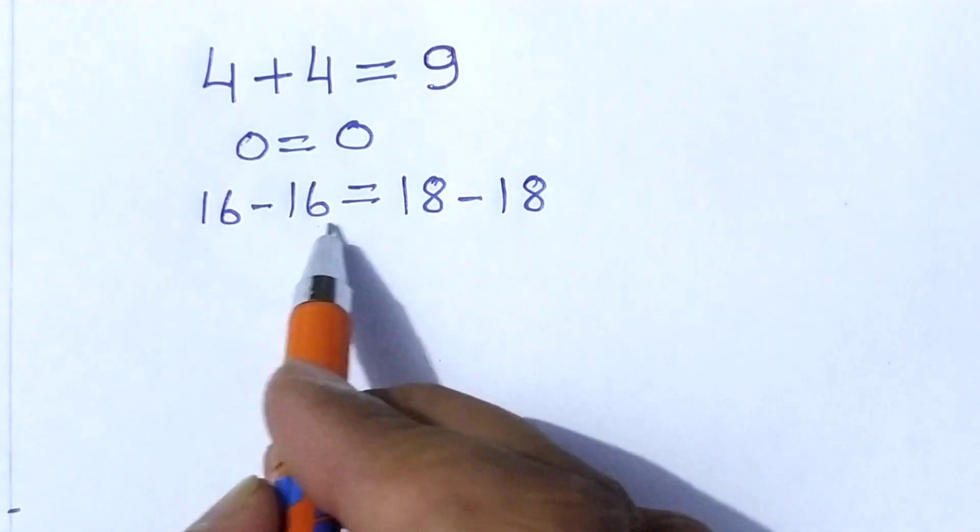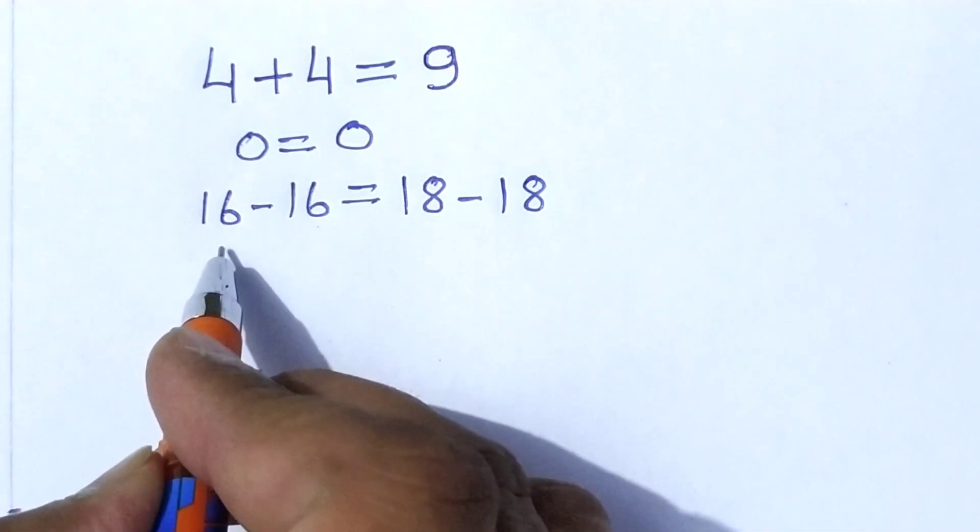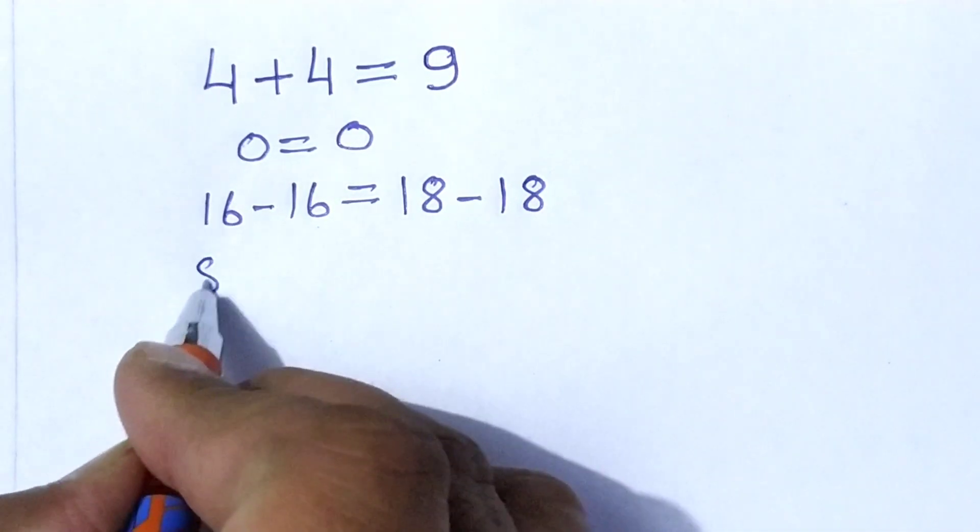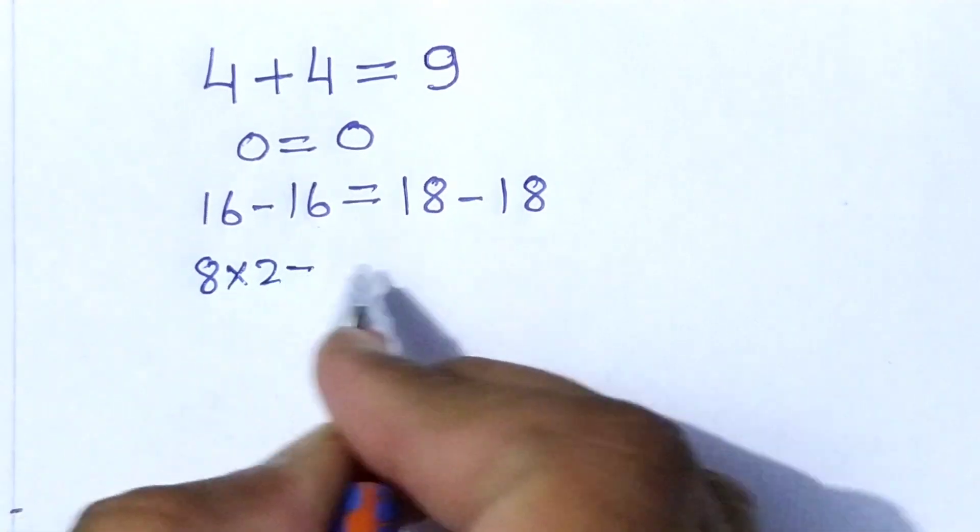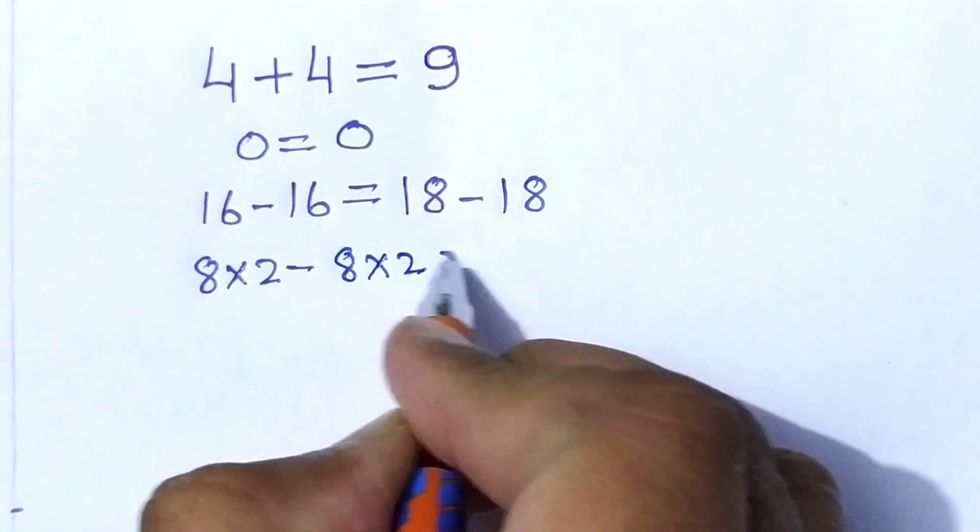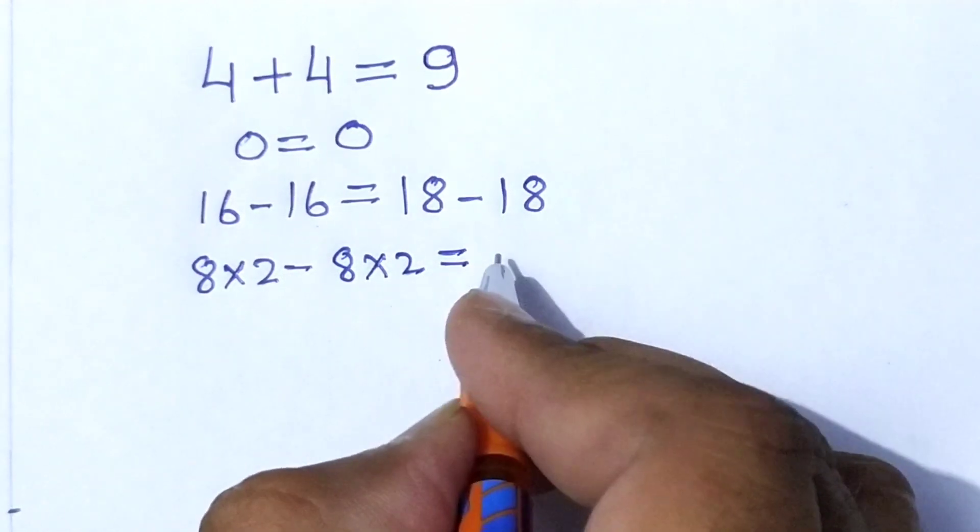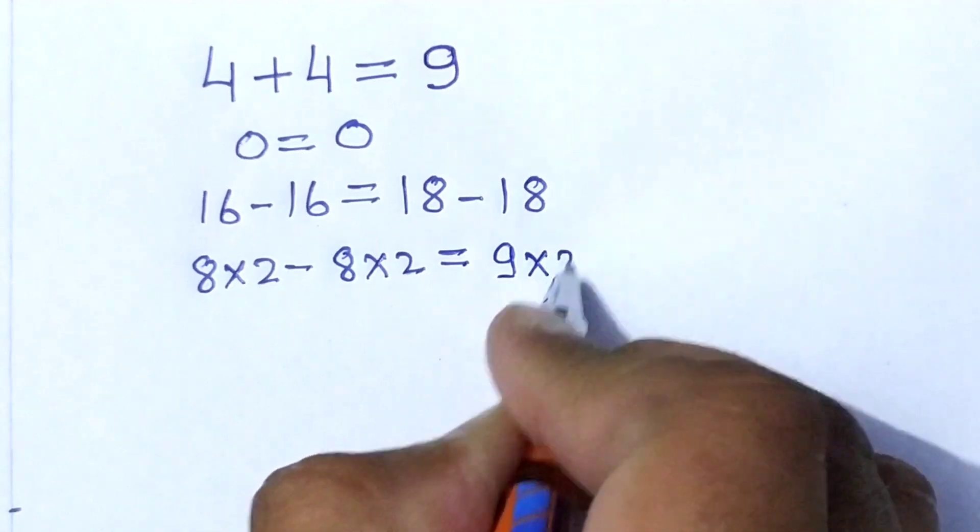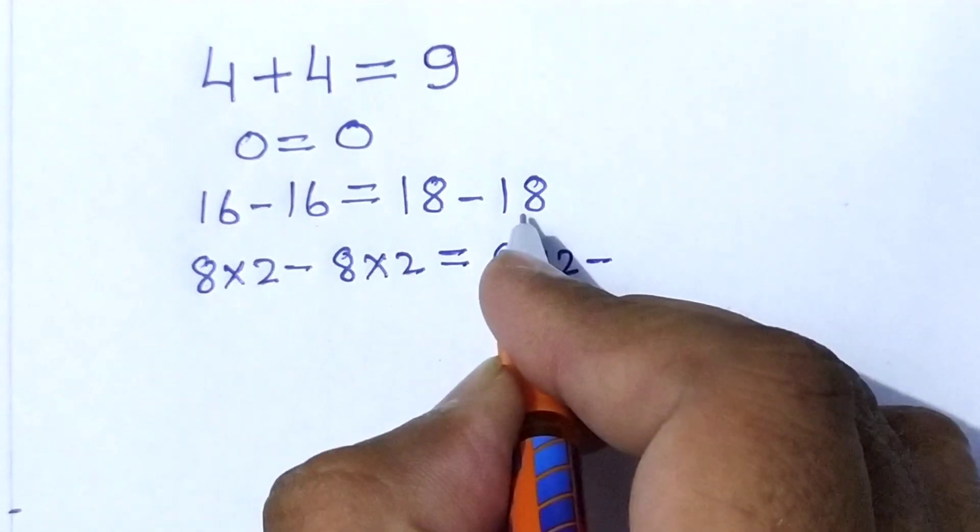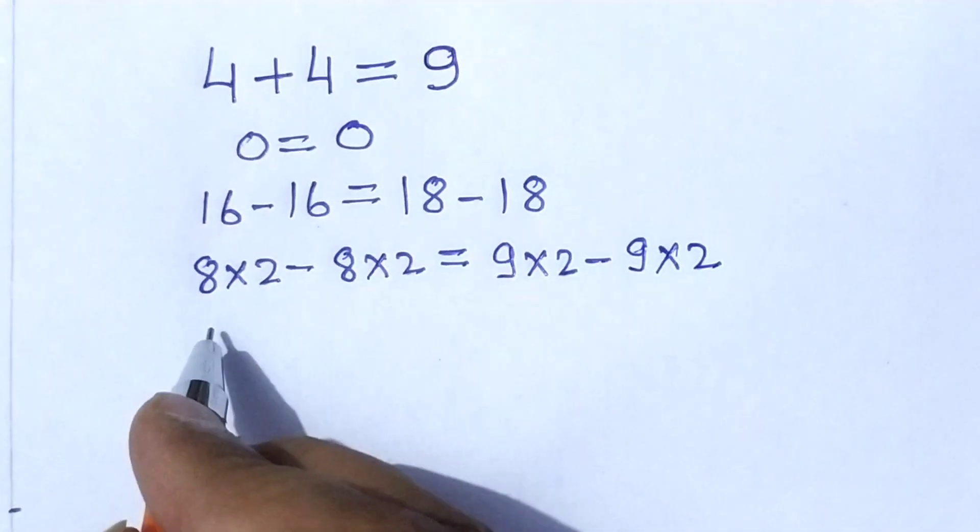So that 0 is equal to 0. Now we can write 16 as 8 into 2 minus this 16 as 8 into 2 is equal to. We can write 18 as 9 into 2 minus this 18 as 9 into 2.